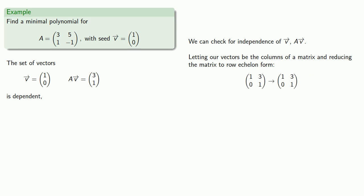Letting our vectors be the columns of a matrix and reducing the matrix to row echelon form gives us, okay, that's not too exciting. But the important thing here is that we have no free variables. And so we know that our set of vectors is independent. No, no. We wanted the set to be dependent.